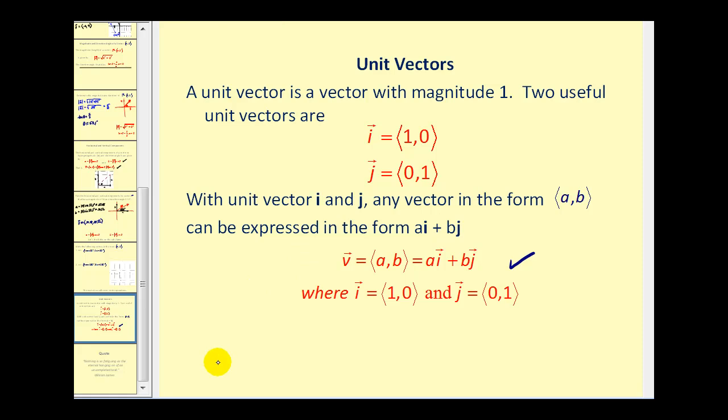For example, if vector v equals ⟨5, 7⟩, we could also say that's equal to 5i + 7j.